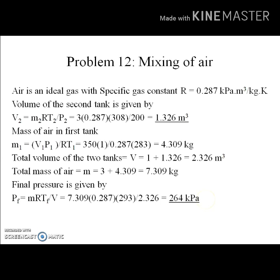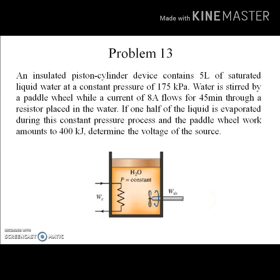Now let's go to the next problem, which is about different types of work being done on a closed system. This is an insulated piston-cylinder arrangement with an initial volume of 5 liters containing only saturated liquid water. The pressure is held constant at 1675 kilopascal, and the water is stirred by a paddle wheel.